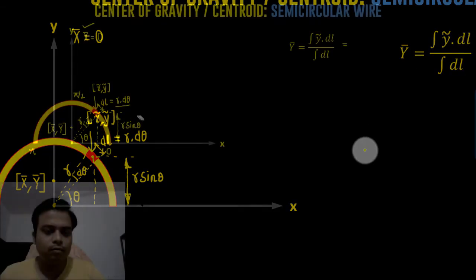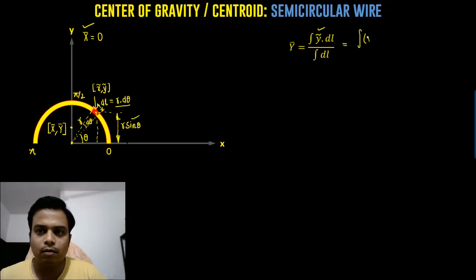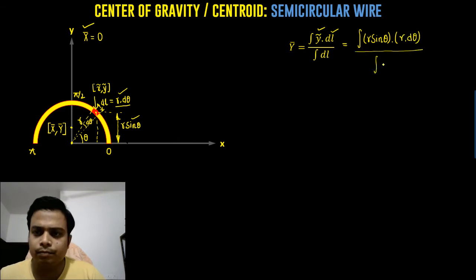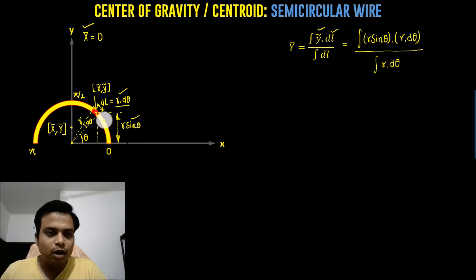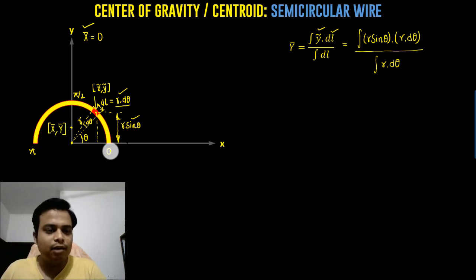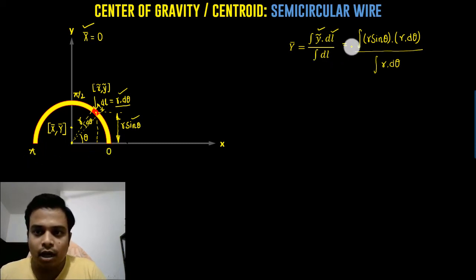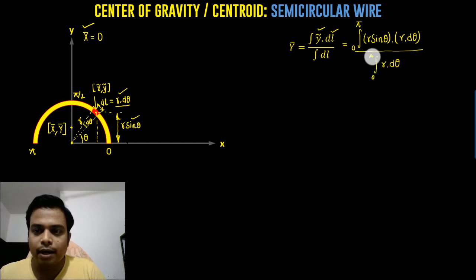Now we punch in all these values and start with integration. The small element starts here and travels around the semicircle, ending on the other side, covering an angle from zero to π. So the limits of integration are taken from zero to π, and we just have to solve this definite integral.